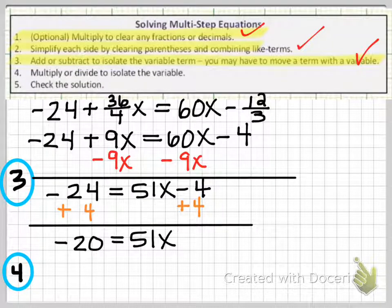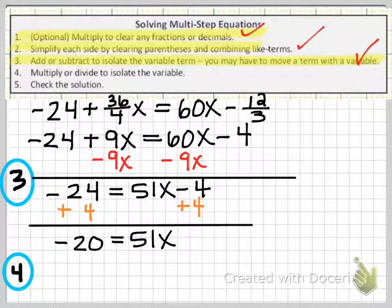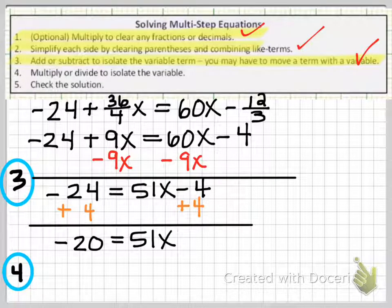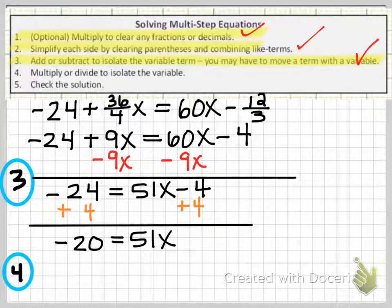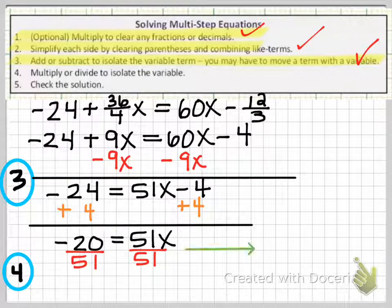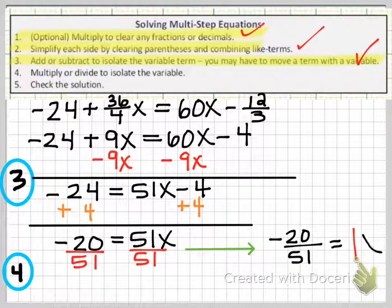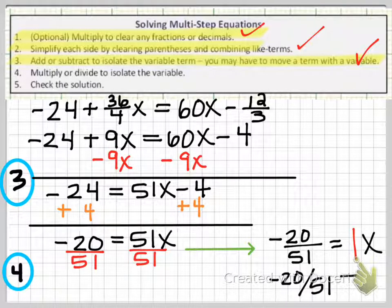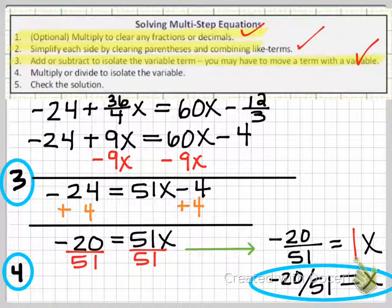Moving on to step 4, now I'm just going to divide both sides by 51 in order to completely isolate the variable. And also remember my goal is to get 1x. I have 51x, so in order to make that 1x, I want to divide both sides by 51. That leaves me with -20/51 equals 1x, and more commonly, we will write -20/51 equals x.